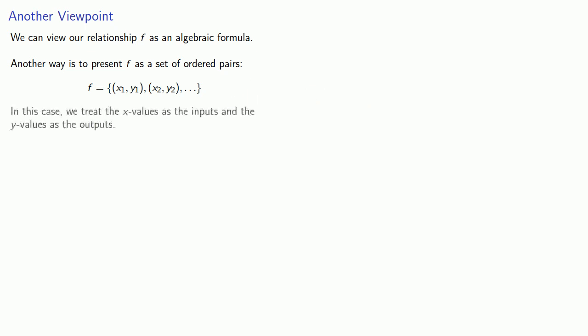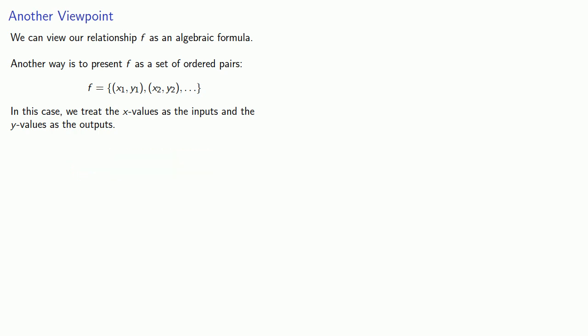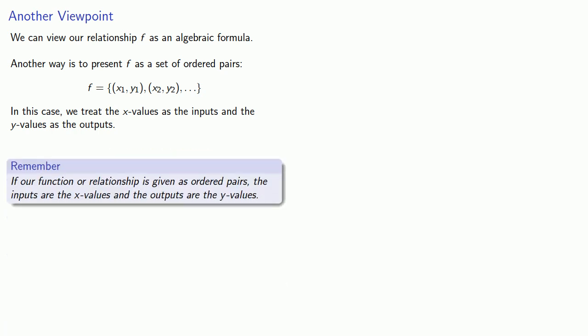In this case, we treat the x values as the inputs and the y values as the outputs. This leads to a useful idea: if our function or relationship is given as ordered pairs, the inputs are going to be the x values and the outputs are going to be the y values.